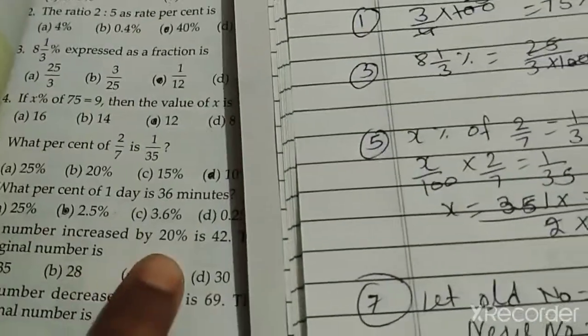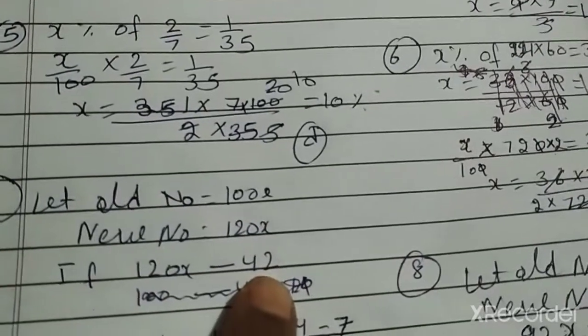Question number seven: ek number ko twenty percent bada diya hai. Badaane ke baad wo number forty-two ho gaya, to original number kya tha? So humne suppose kar liya x. The answer is 35.